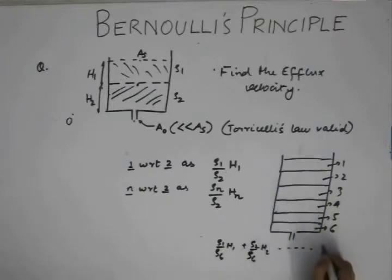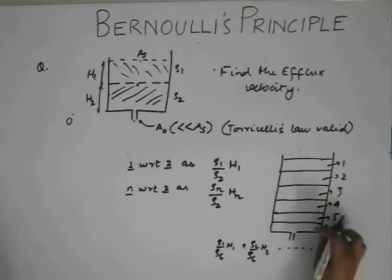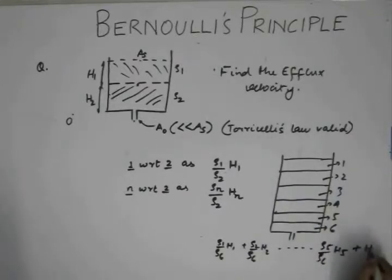so on. For the fifth fluid, it will be rho5 by rho6 to h5. And finally for this height, we will just have h6 because rho6 by rho6 is going to be 1.